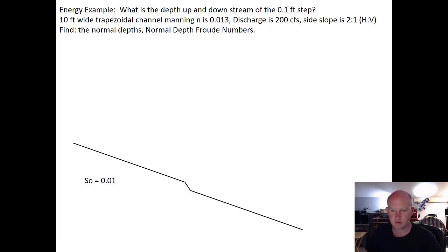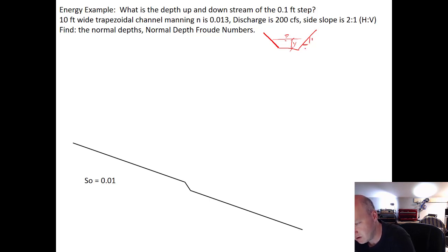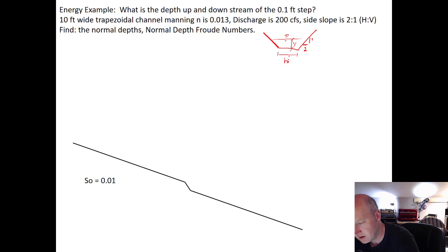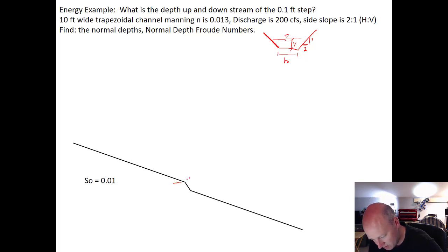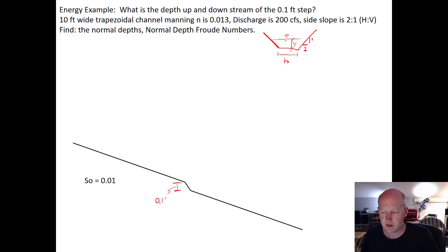This is our first energy example. We have a trapezoidal channel where the side slopes are 2-to-1 and the bottom width is 10 feet. We want to solve a problem involving a step — a fairly localized, relatively small step down — and figure out what's happening at that step.